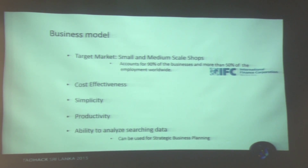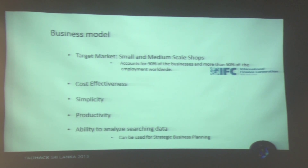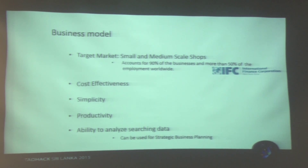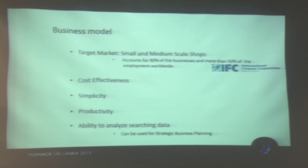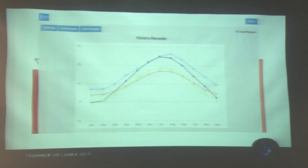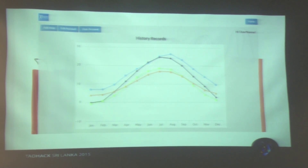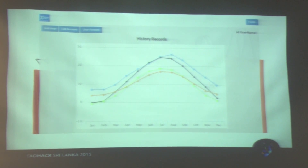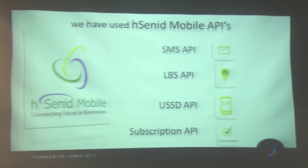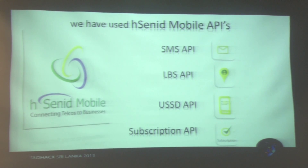Our system is cost-effective, productive, and simple. Our system is also a substitute for a website, but far more better. We will provide monthly reports for shops about the searching of buyers around the shop, which will lead the shop to take strategic decisions for their future business plans. In our system, we have used SMS, LBS, USSD, and the subscription API of Zenit Mobiles.